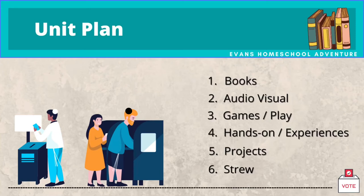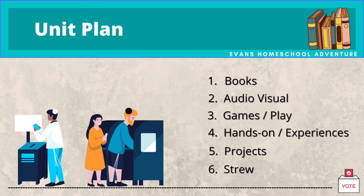For this unit study, I didn't plan all that much, and out of these six elements, I've planned for books, audiovisual materials, a game, and I guess what you can consider sort of an experience — I'm going to plan to have a couple of discussions with my kids. If my kids end up really getting into this unit, we'll end up doing more, but if not, that is where we're planning to stay.